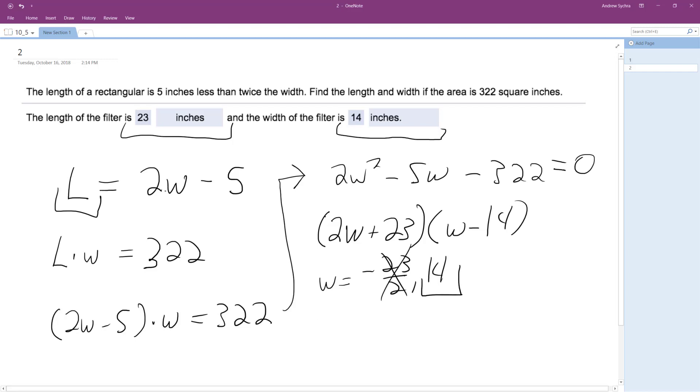And then if we plug in 14 into the original equation, we get 28 minus 5, which is equal to 23. So in this instance, width is equal to 14 inches, and length is equal to 23 inches.